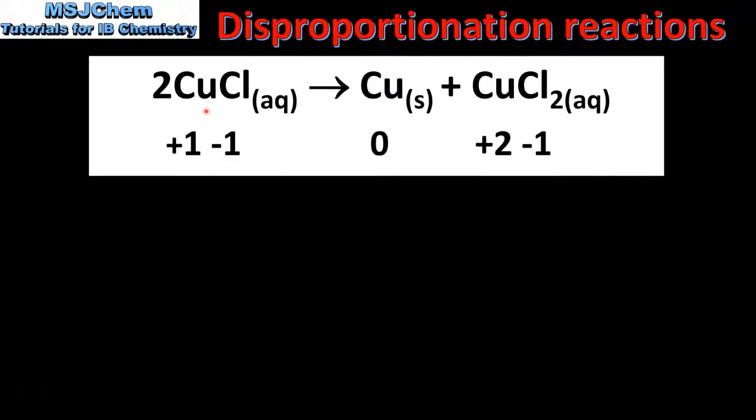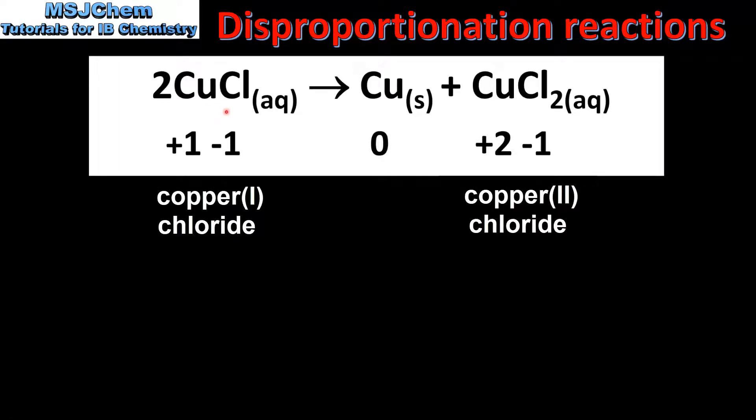In the next example, we have a reaction where CuCl reacts to form Cu and CuCl₂. If we assign oxidation states, we can see that the oxidation state of the Cu⁺ ion is changing from plus 1 to 0 and plus 1 to plus 2.